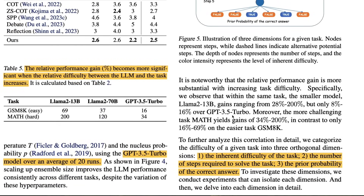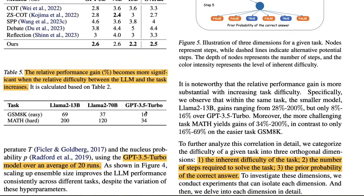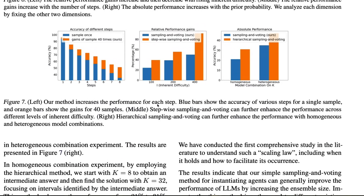The most important finding is that the relative performance gain becomes more significant when the relative difficulty between the LLM and the task increases. For a smaller model on a very difficult task, the improvement is huge. But for a larger, better model, when you increase the difficulty, the performance gain is not very significant. You can see this pattern across different levels.